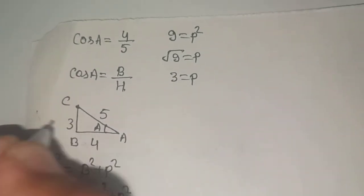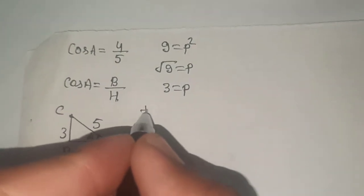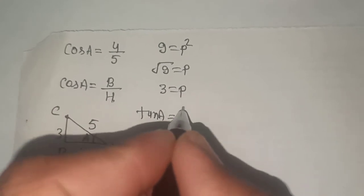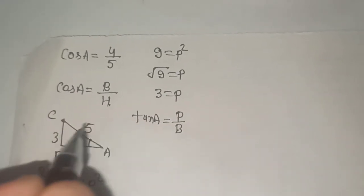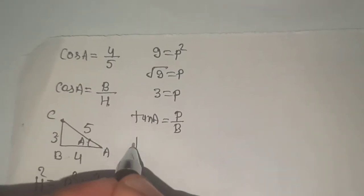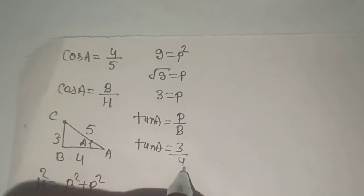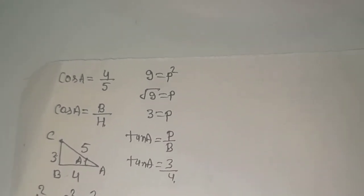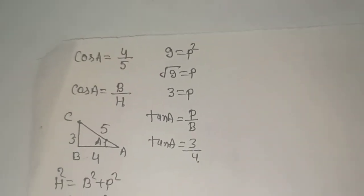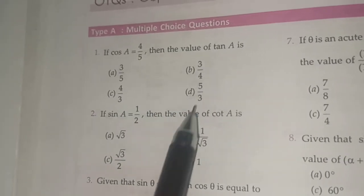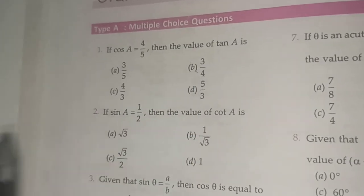Now, we have to find the value of tan. So tan A is perpendicular upon base, so perpendicular is 3 and base is 4. So the option will be 3 by 4, so option B will be correct.